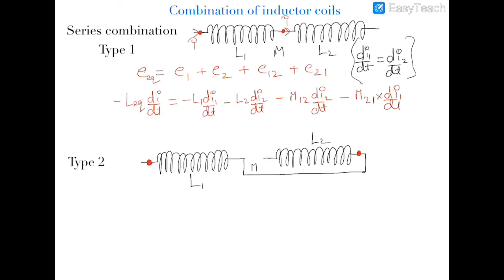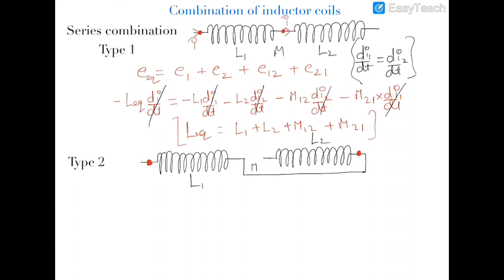Since they are connected in series we can cancel out dI/dt from all terms, and hence L_equivalent equals L1 plus L2 plus M12 plus M21. Since M12 and M21 are equal, we can write this as L1 plus L2 plus 2M.